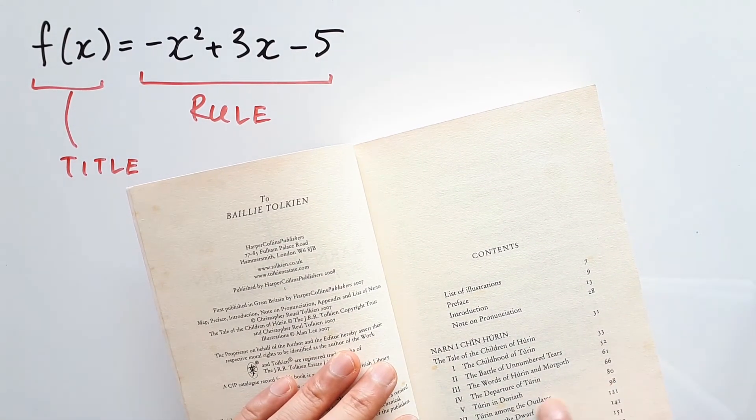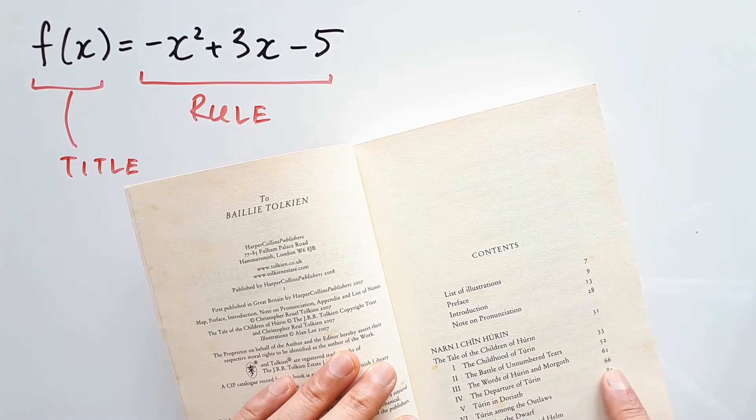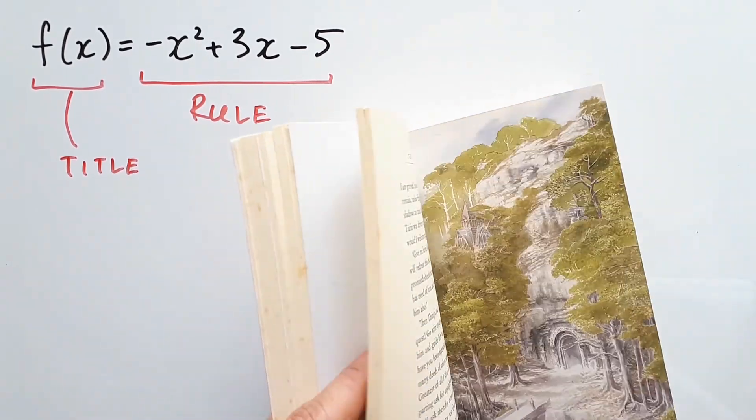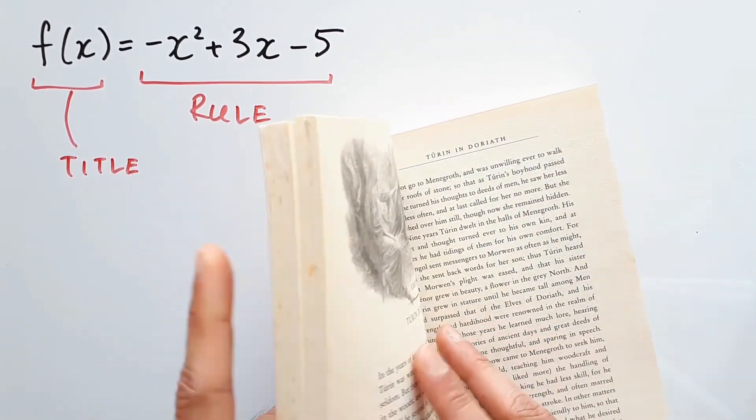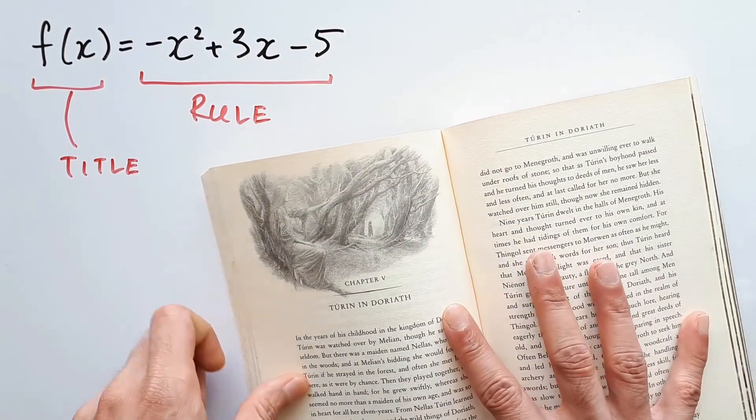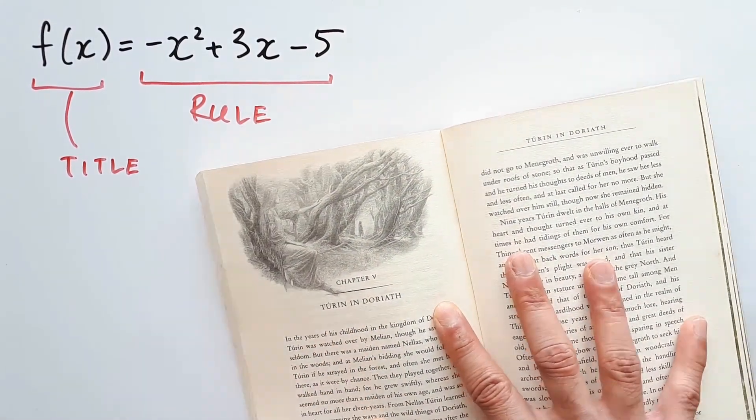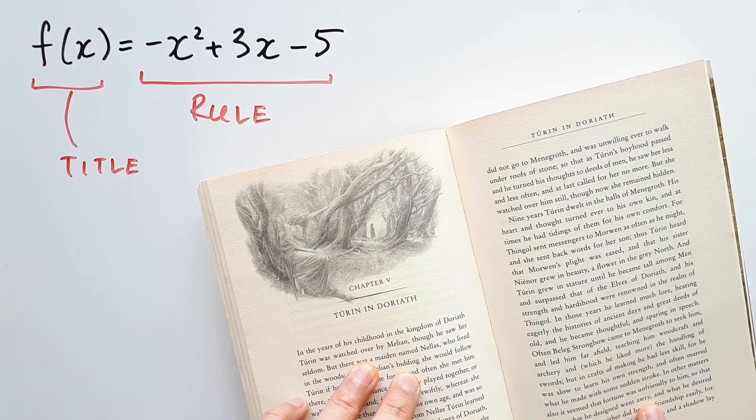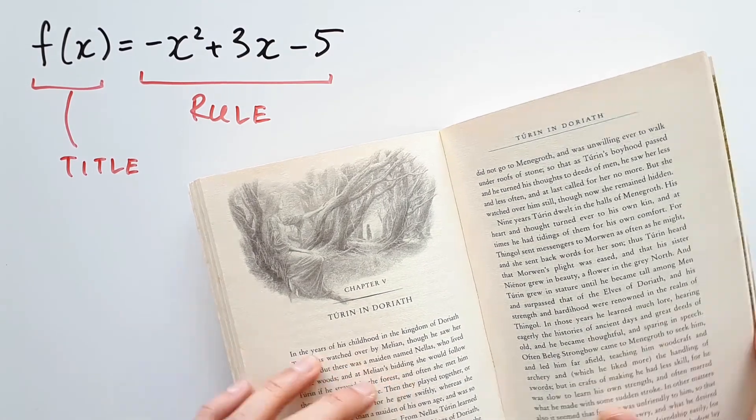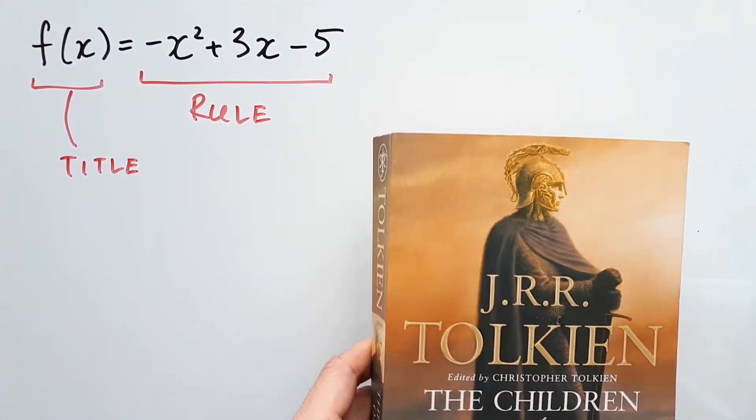So for example, if I wanted to go to chapter 5, I will need to turn to page 80. Alright, so page 80. Here we go. And we can basically start reading the entire chapter from here, right? This can be considered like a result, right? This is what we wanted to get to, some kind of outcome.